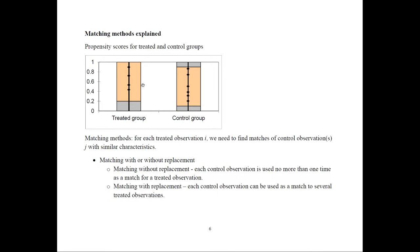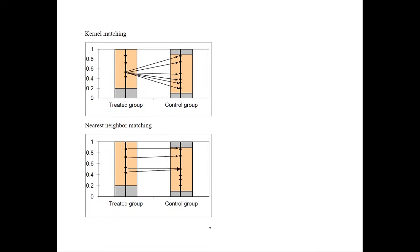With replacement, a matched control observation is put back in the pool and can be matched to other treated observations. Keeping it in the pool may yield closer matches but one observation may be used too many times. Removing it from the pool gives less close matches. There are trade-offs between these two approaches.